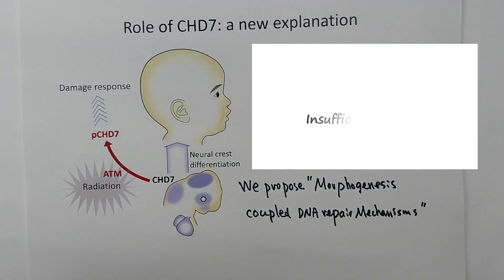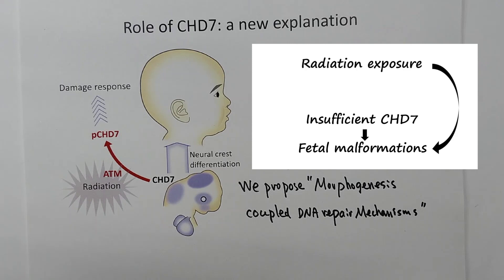Insufficient amount of CHD7 protein are known to cause fetal malformations. On the other hand, fetal malformations also occur with radiation exposure.